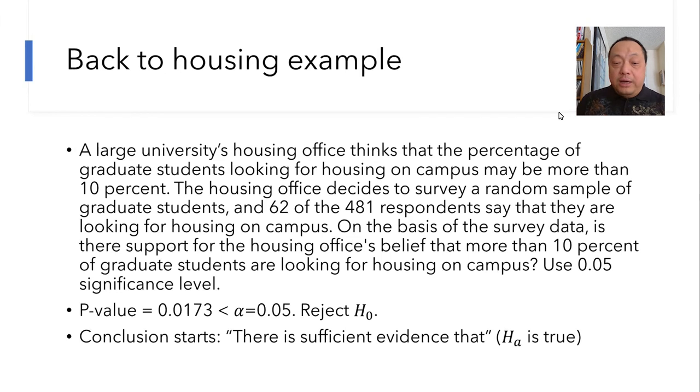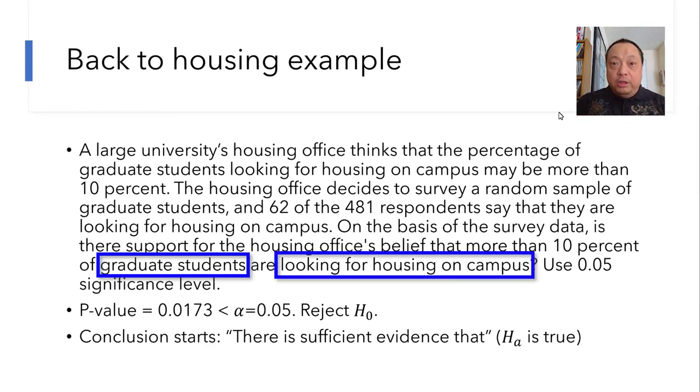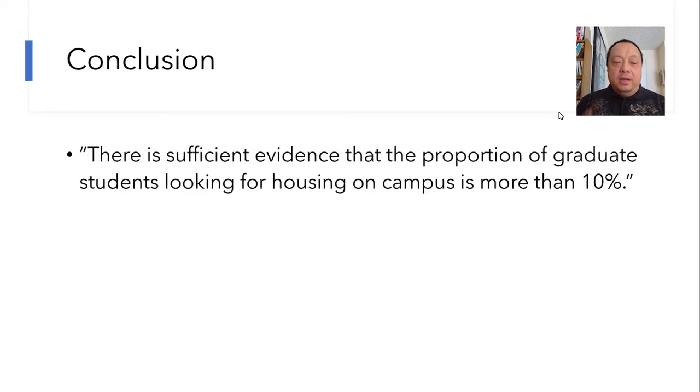Back to the graduate housing problem. P-value equals 0.0173, we reject H0. So the conclusion starts with, there is sufficient evidence that—that what? That HA is true. So just write that verbally in context. The population here are the graduate students. And the parameter is the proportion that look for housing on campus. So put all of that in. There is sufficient evidence that the proportion of graduate students looking for housing on campus is more than 10%.